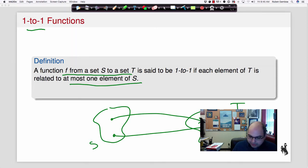Note that there could be other elements of t. The important thing is that an element of t doesn't have two arrows going into it.